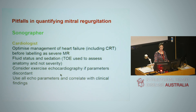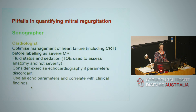Exercise echo is really useful because it gives an assessment of functional capacity. You can look at mitral regurgitation severity before and after exercise and whether there's an increase in ERO, which predicts severity, and we can also look at pulmonary pressures. As with all echo assessment, we must ensure all parameters are considered and correlated back with the clinical findings.